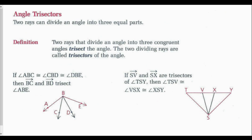Angle trisectors. Two rays can divide an angle into three equal parts. Two rays that divide an angle into three congruent angles trisect the angle, and the two dividing rays are called trisectors of the angle. In my figure on the left, if angle ABC is congruent to angle CBD, which is congruent to angle DBE, then ray BC and ray BD trisect angle ABE. And if ray SV and ray SX are trisectors of angle TSY, then angle TSV is congruent to angle VSX, which is congruent to angle XSY.